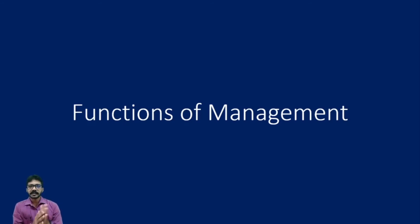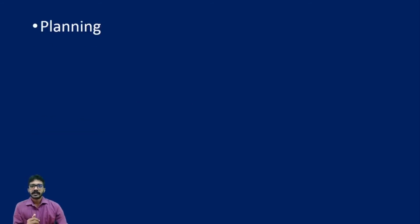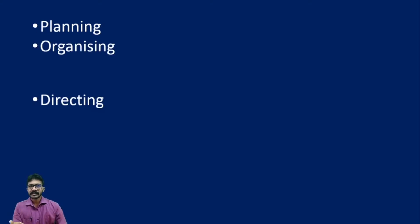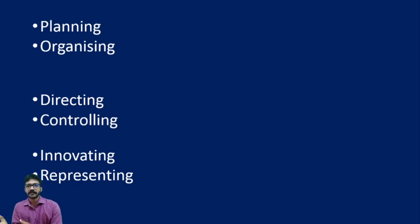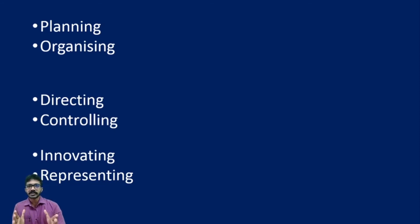Next, we shall look at the functions of management. Now that we know its nature, let us go through the functions one by one. The first function is planning, followed by organizing, then directing, then controlling, innovating, and representing. These are the six important functions of management. In order to complete the processes of planning, organizing, directing, and actuating, these six functions must be carried out. The process may vary across organizations, but the background structure remains the same.